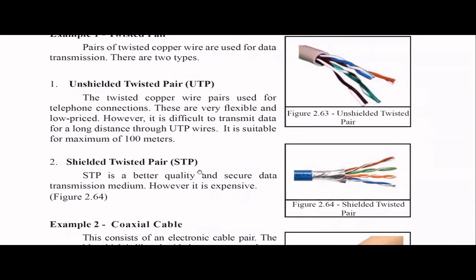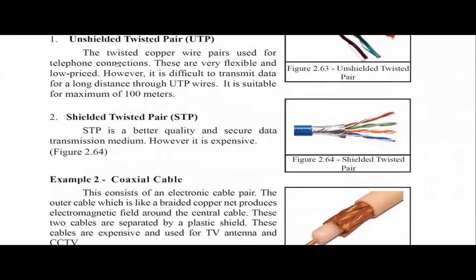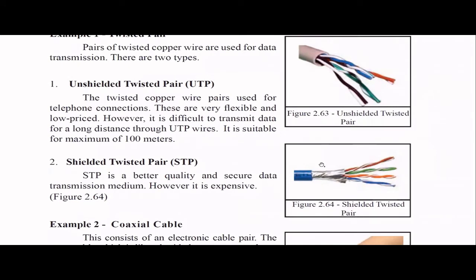UTP is very flexible and low in price, but the maximum transmission distance is about 100 meters. STP is the shielded version — you can see a protective shield around it. STP offers better quality and more secure data transmission, but it's a bit more expensive than UTP. That covers the twisted pair cables.